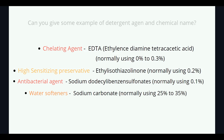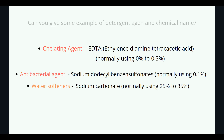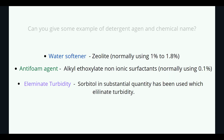Antibacterial agent: sodium dodecyl benzene sulfonate, normally used 0.1%. Water softener: sodium carbonate, normally used 25% to 35%; zeolite, normally used 1% to 1.8%. Antifoaming agent: alkyl ethoxylate non-ionic surfactant, normally used 0.1%. Eliminate turbidity: sorbitol in substantial quantity has been used to eliminate turbidity.